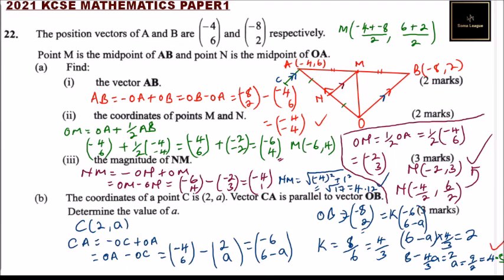That's how you work out that question and get all 10 marks. The complication with vector questions is that you must be very careful with the initial stages. Here, we found AB first and then used it in roman numeral two as ½AB. If you mess up the first part, the whole question falls apart. So if you're not sure of the initial stages, be very careful.